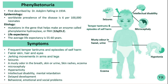Phenylketonuria (PKU) is a genetic metabolic disorder characterized by the inability to metabolize the amino acid Phenylalanine, due to a deficiency in the enzyme Phenylalanine hydroxylase, so Phenylalanine cannot be effectively converted to tyrosine.